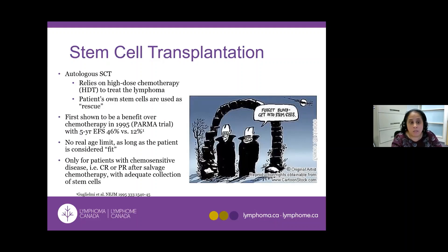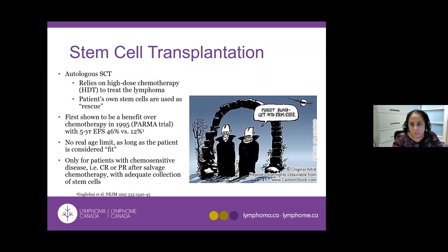Stem cell transplant in this setting refers to an autologous stem cell transplant — using the patient's own stem cells to rescue them from high-dose chemotherapy. Really, it's the high-dose chemotherapy doing the work to cure the lymphoma, while the stem cells help you recover. We've been doing this regularly since 1995, and all patients should be considered; we don't have a strict age cutoff but use fitness criteria including organ function and frailty assessment. The key point is this treatment only works if salvage chemotherapy shows the tumor is shrinking. If the tumor doesn't respond to salvage chemo, stem cell transplant is not an option.